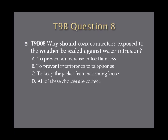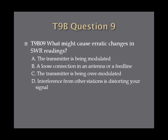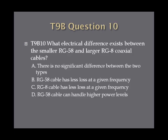Question 8. Why should coax connectors exposed to the weather be sealed against water intrusion? A. To prevent an increase in feed line loss. B. To prevent interference to telephones. C. To keep the jacket from becoming loose. D. All of these choices are correct. Question 9. What might cause erratic changes in SWR readings? A. The transmitter is being modulated. B. A loose connection in the antenna or a feed line. C. The transmitter is being over modulated. Or D. Interference from other stations is distorting your signal. Question 10. What electrical difference exists between the smaller RG58 and larger RG8 coaxial cables? A. There is no significant difference between the two types. B. RG58 cable has less loss at a given frequency. C. RG8 cable has less loss at a given frequency. Or D. RG58 cable can handle higher power levels.